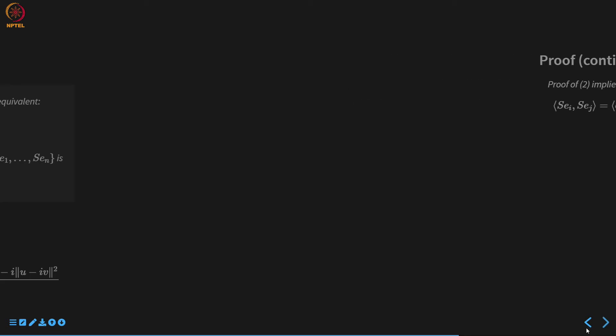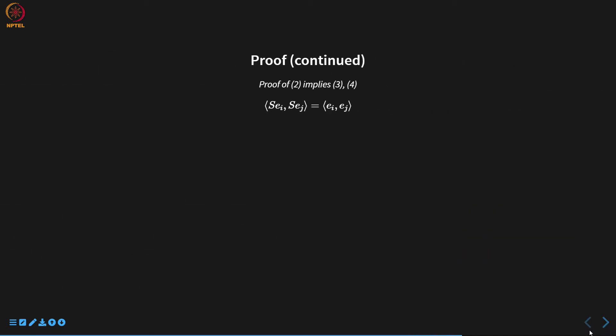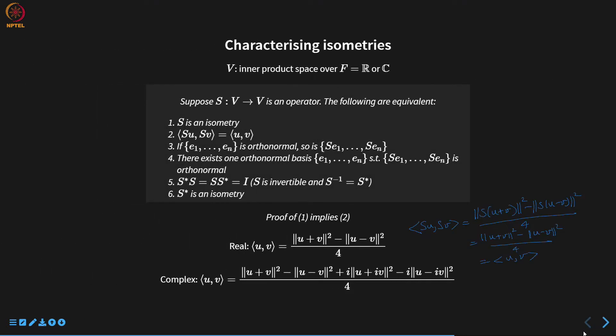For 2 implies 3 and 4: once inner products are preserved, if {eᵢ} is orthonormal, then ⟨Seᵢ, Seⱼ⟩ = ⟨eᵢ, eⱼ⟩ = δᵢⱼ, so {Seᵢ} is also orthonormal. Conditions 3 and 4 are essentially the same, since any inner product space has an orthonormal basis — you take that basis, operate with S, and get another orthonormal set.